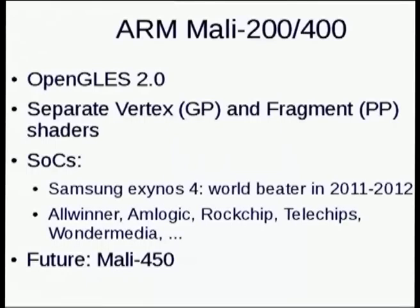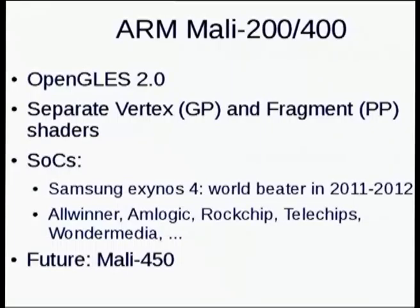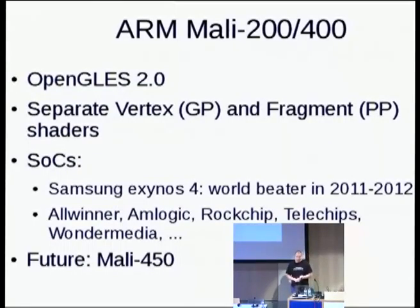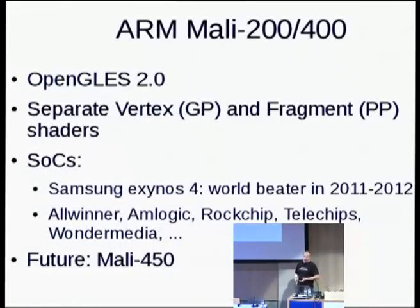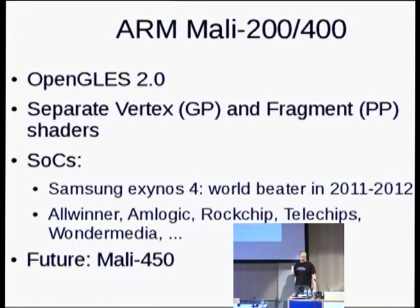The Mali was a world-beater in 2011–2012 and has been pretty much everywhere. It's a standard OpenGL ES 1 and OpenGL ES 2 chip with separate shaders. There's about a 50% chance that if you're buying a Chinese tablet, you have a Mali in your hands. And of course the Samsung Exynos — so many people who own a Samsung Galaxy device have a Mali. The Mali 450 is coming out in a few months, doubling the amount of fragment shaders and pretty much doubling performance.